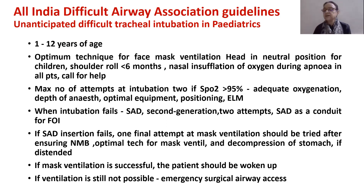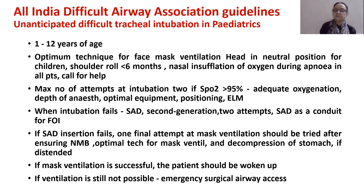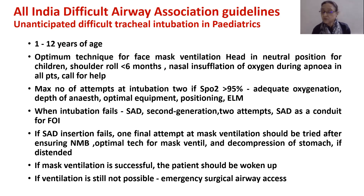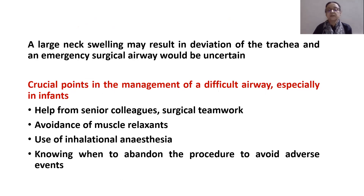Through the supraglottic airway device, fiberoptic bronchoscopy and intubation can be performed. If SAD insertion fails, one final attempt at mask ventilation should be tried after ensuring neuromuscular blockade. If mask ventilation is successful, wake up the patient and postpone surgery. If ventilation is still not possible, emergency surgical airway is the option — though a large neck swelling may cause tracheal deviation and make emergency surgical airway uncertain.